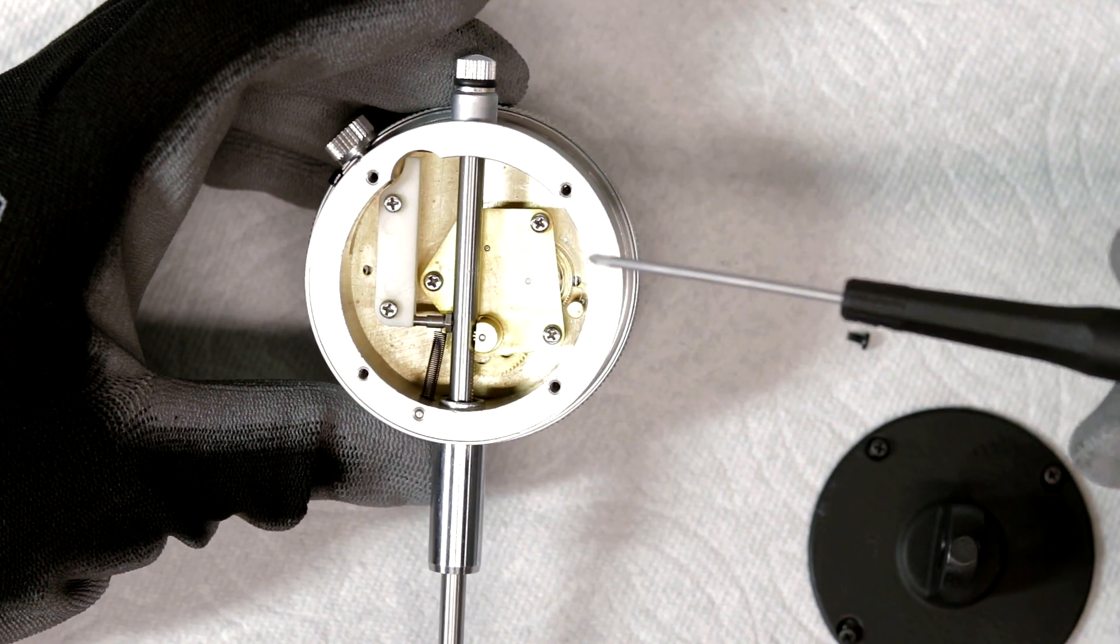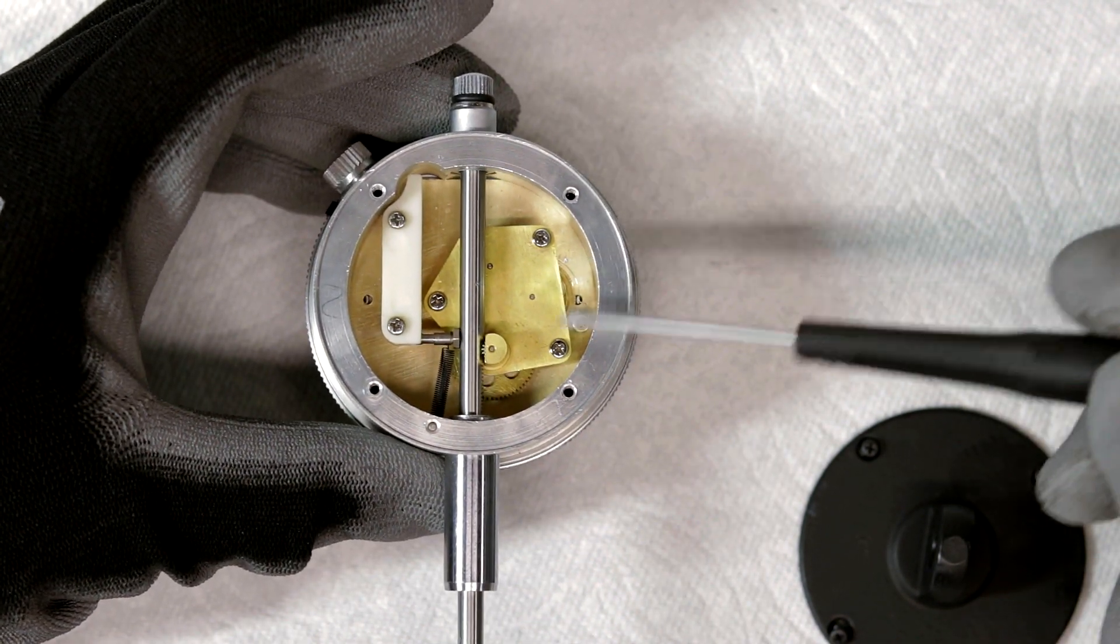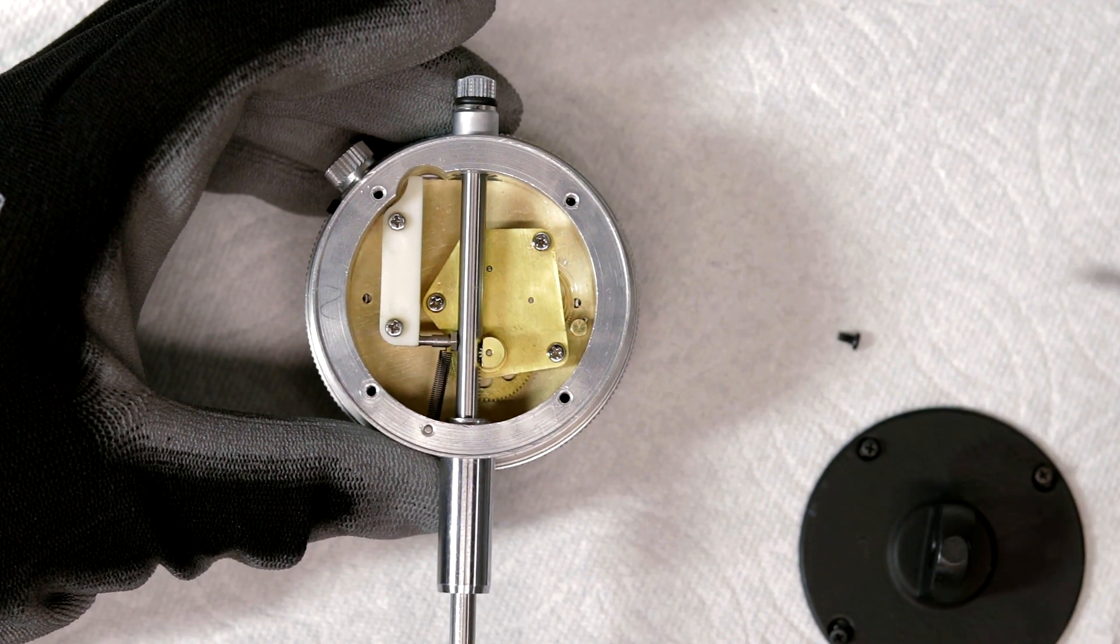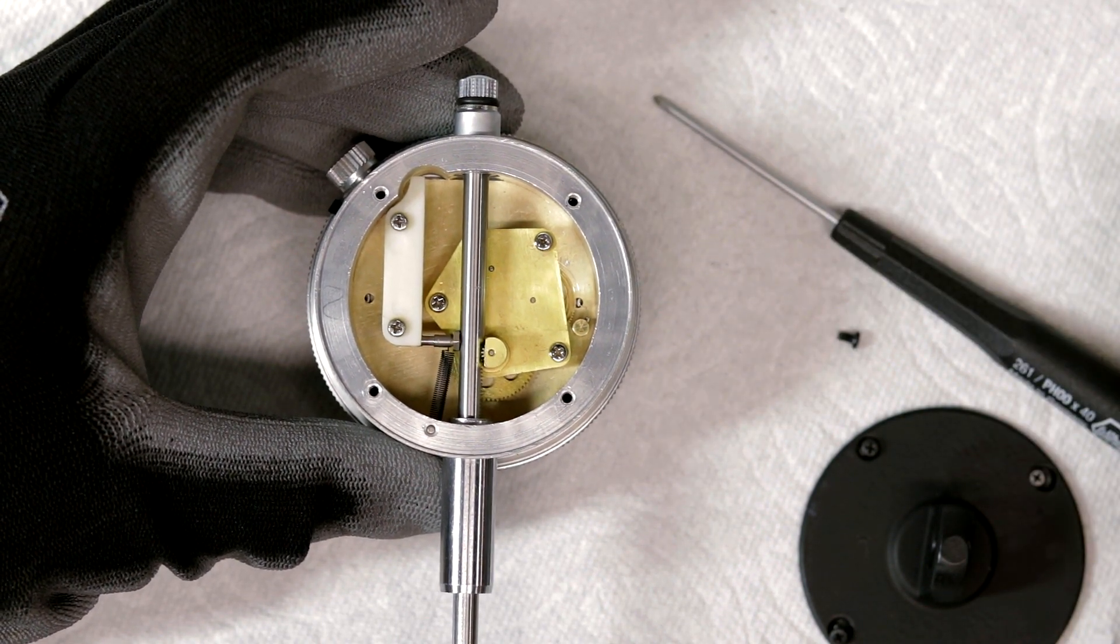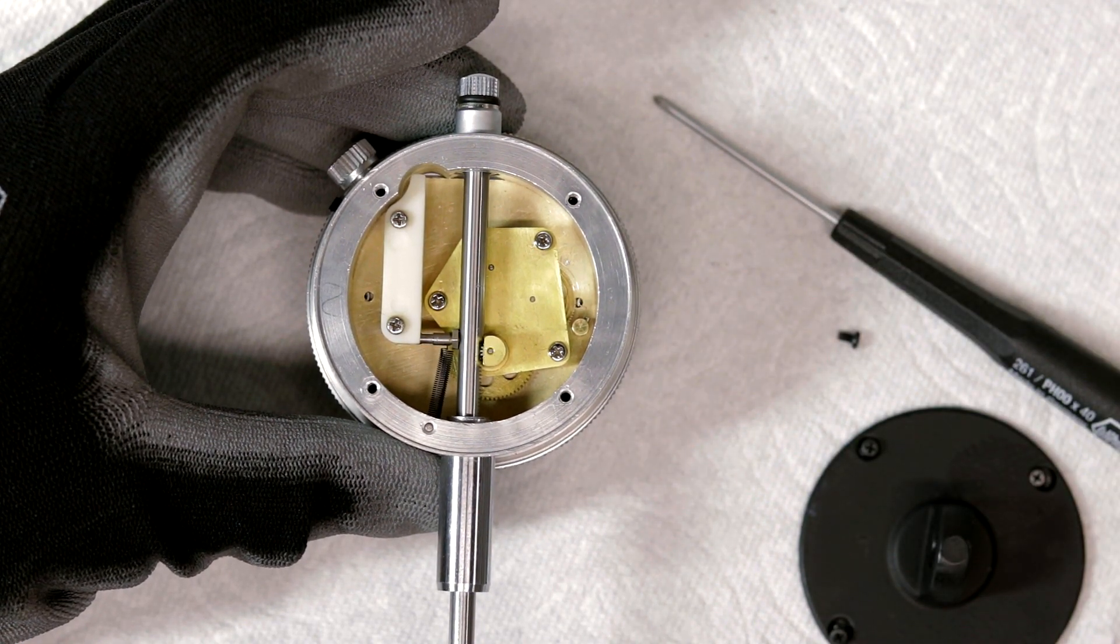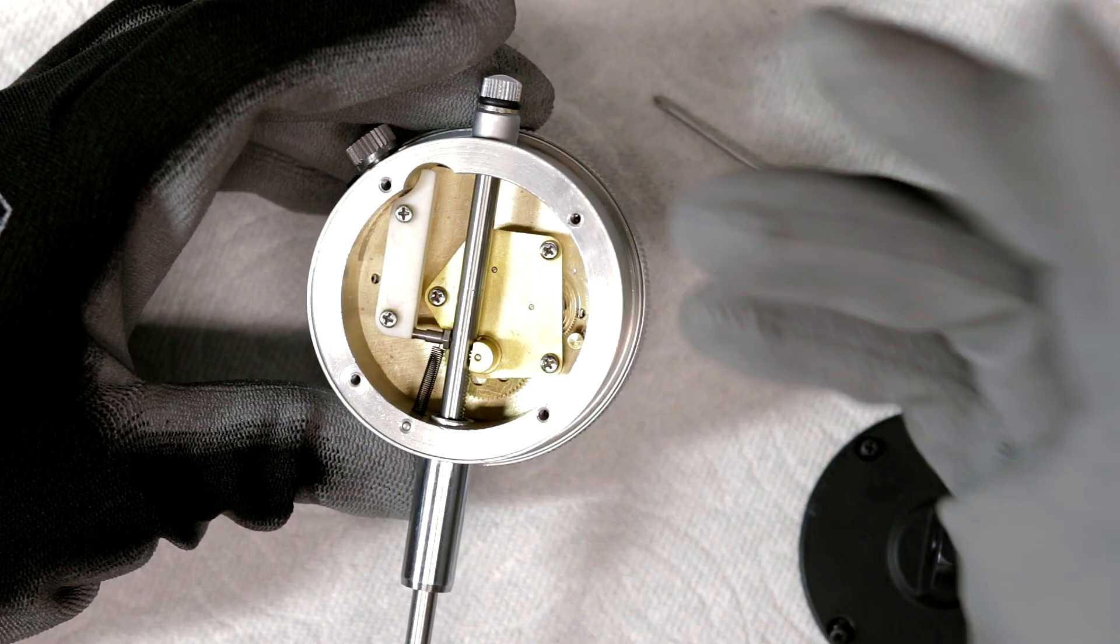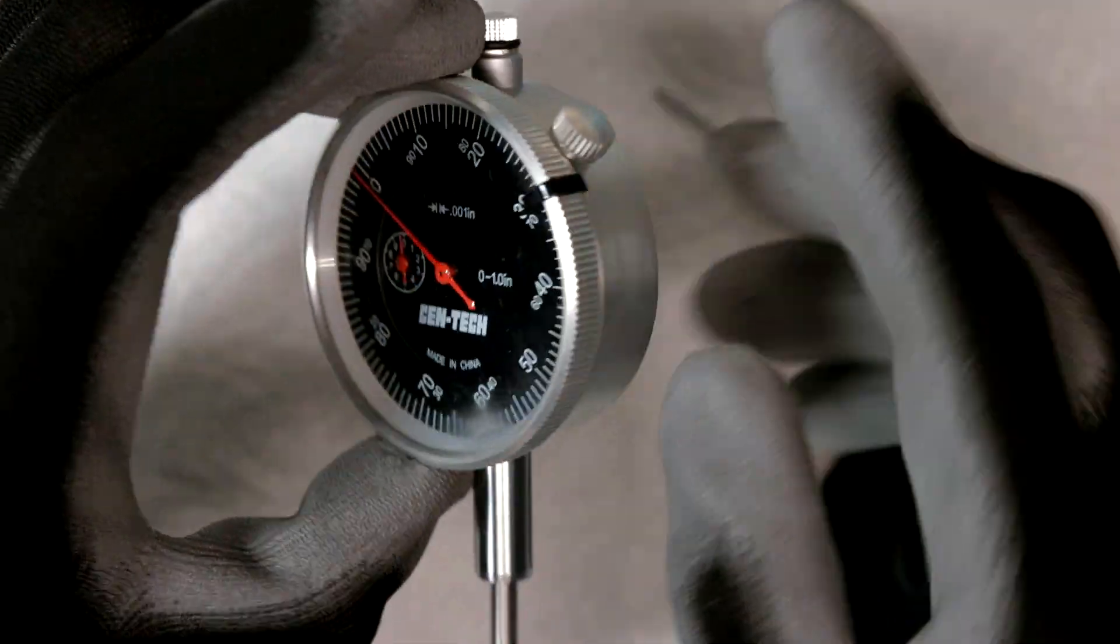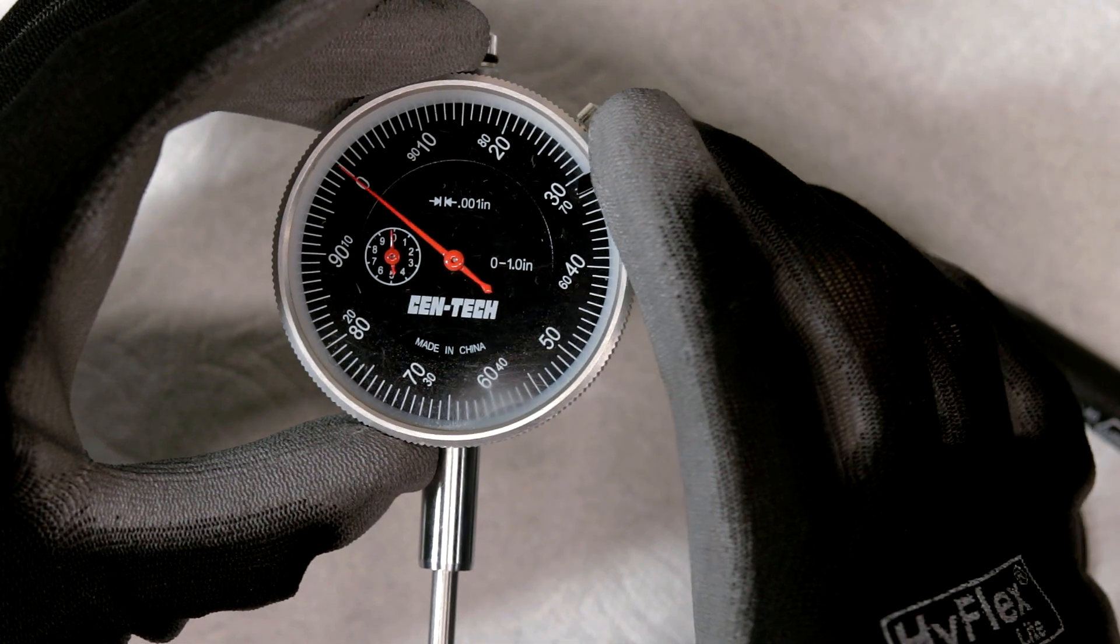But yeah, that's pretty much the combination is just denatured alcohol to clean it up, clean it up with the paint brush and then follow it up with some machine oil. And let everything work in and you'll have a nice, smooth operating dial indicator.